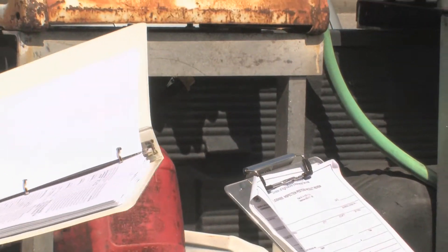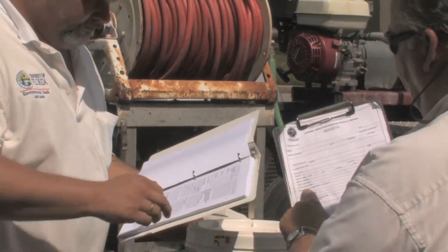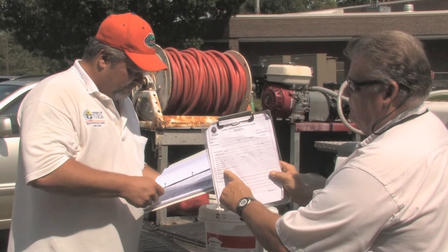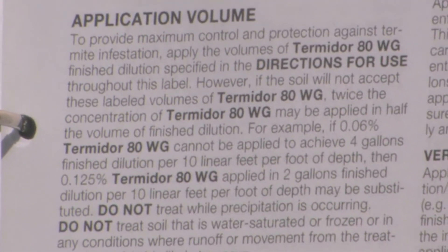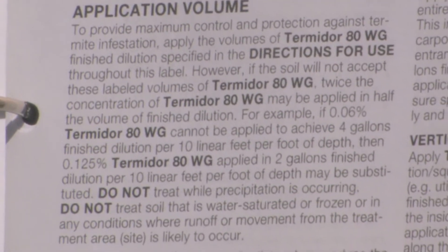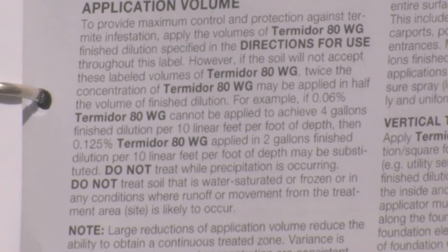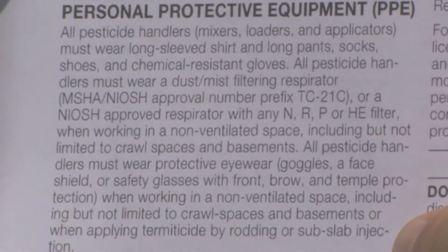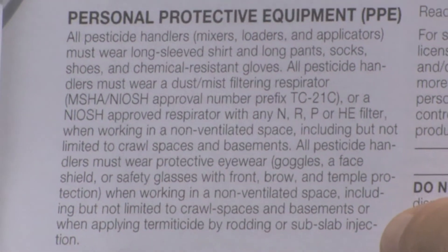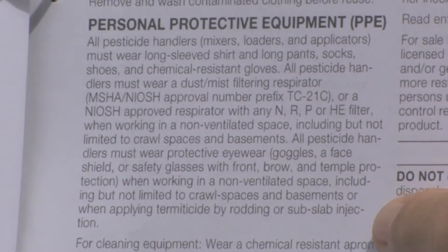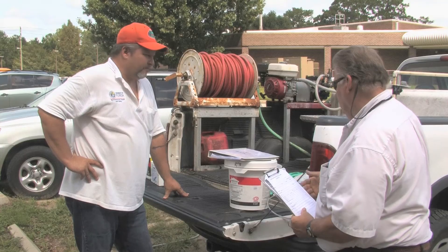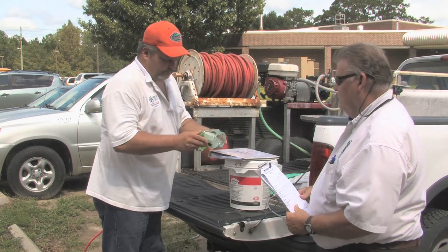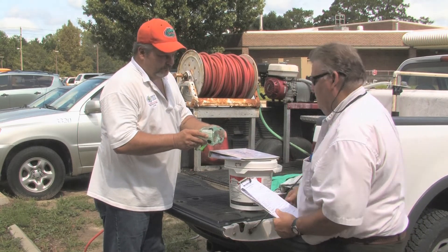The next question is: what is the application volume normally applied? You can also refer to the label for this. Most times this is common knowledge about how many gallons per square feet you would use. Question number 10 is: what is the personal protective equipment? This is also listed on the label, and a lot of times this is where applicators don't use the proper personal protective equipment.